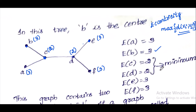So looking at this graph, C and D have minimum eccentricity. If we check the graph, C and D give minimum eccentricity values. Therefore this graph has two centers: C and D. The pendant vertices in this graph are A, B, E, and F — these are the pendant (leaf) vertices.